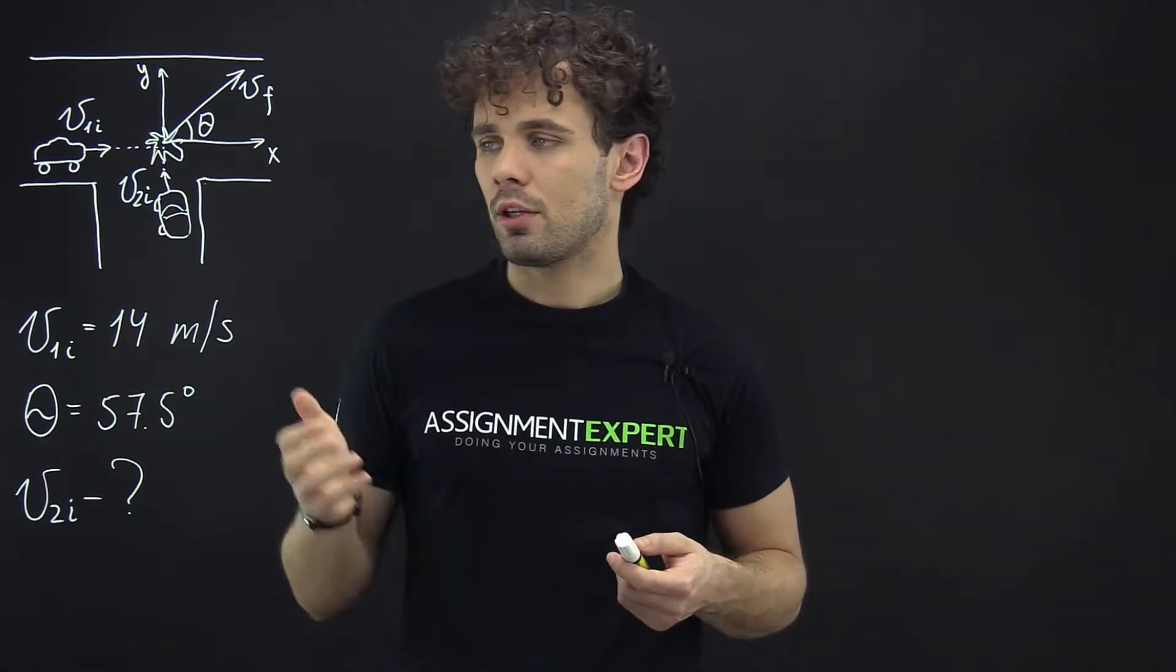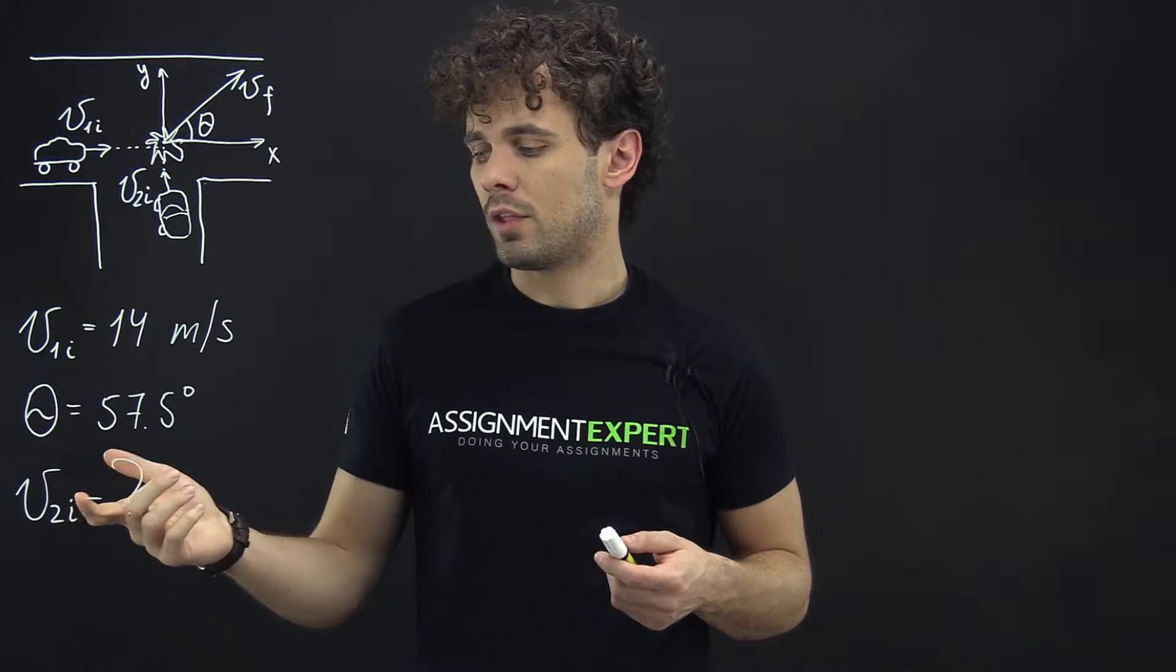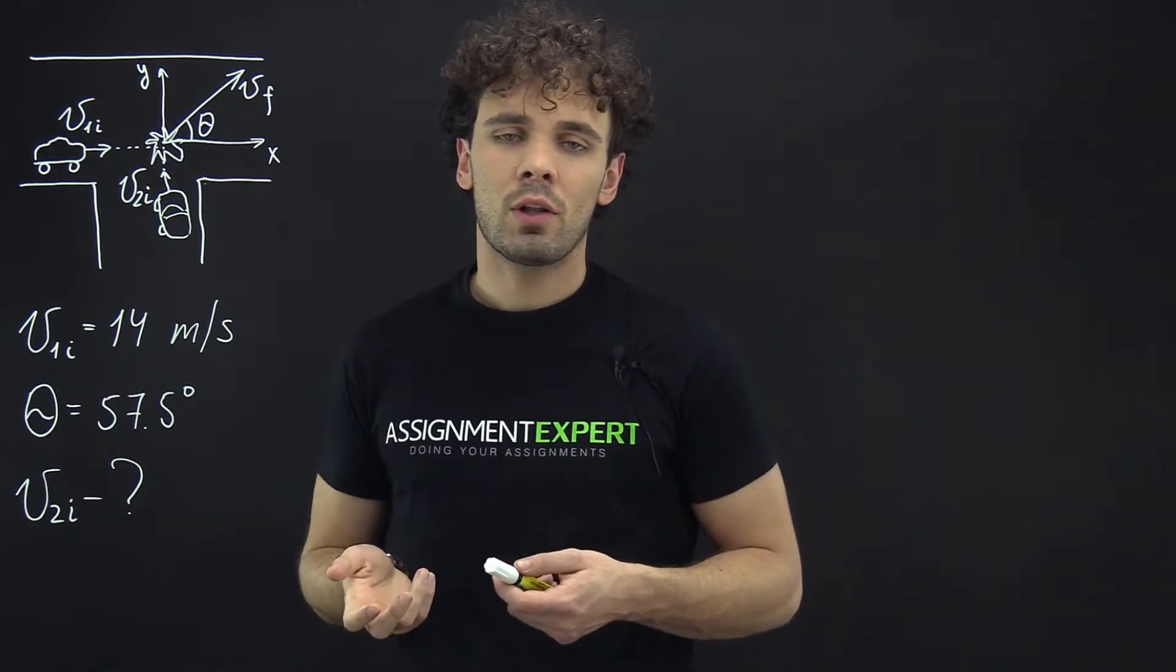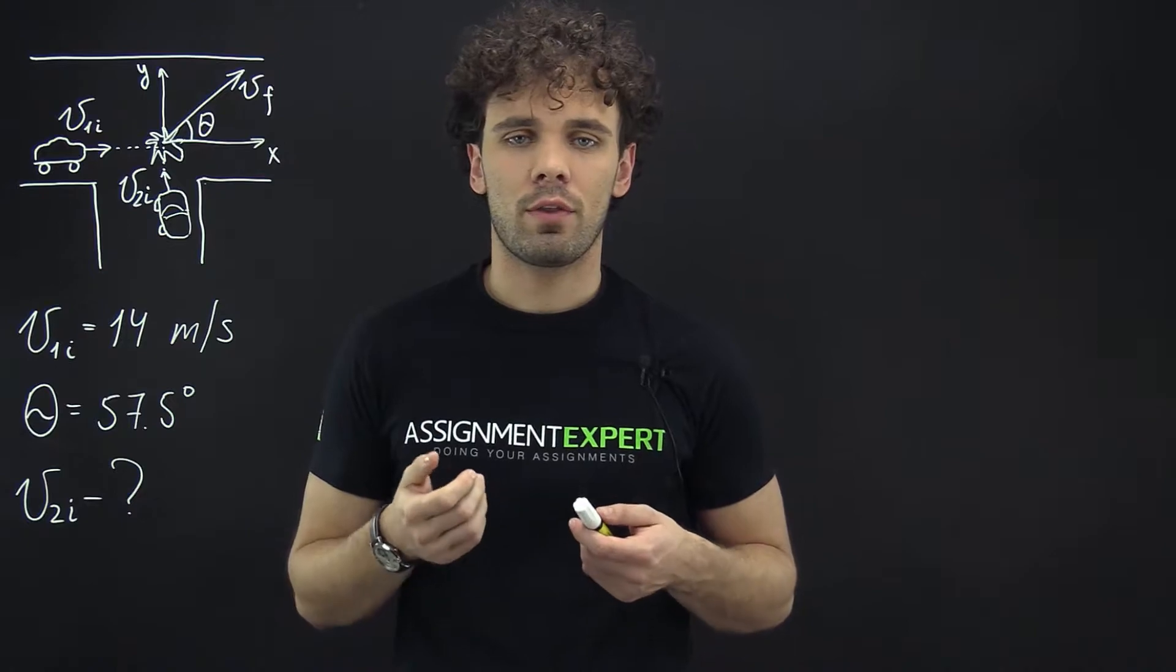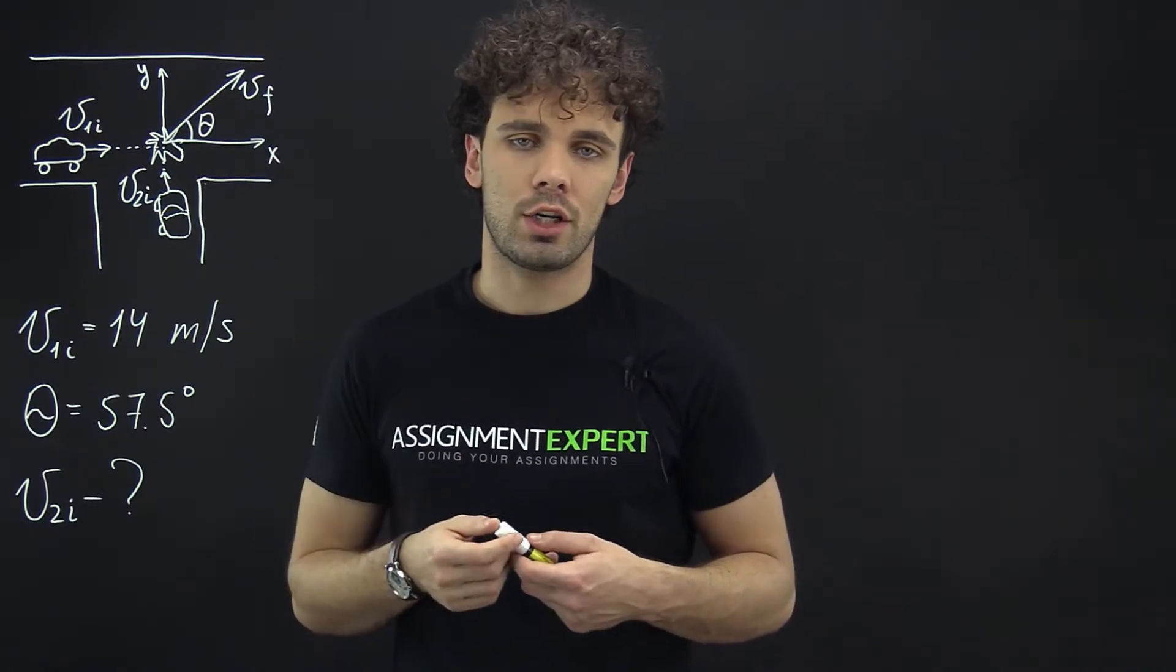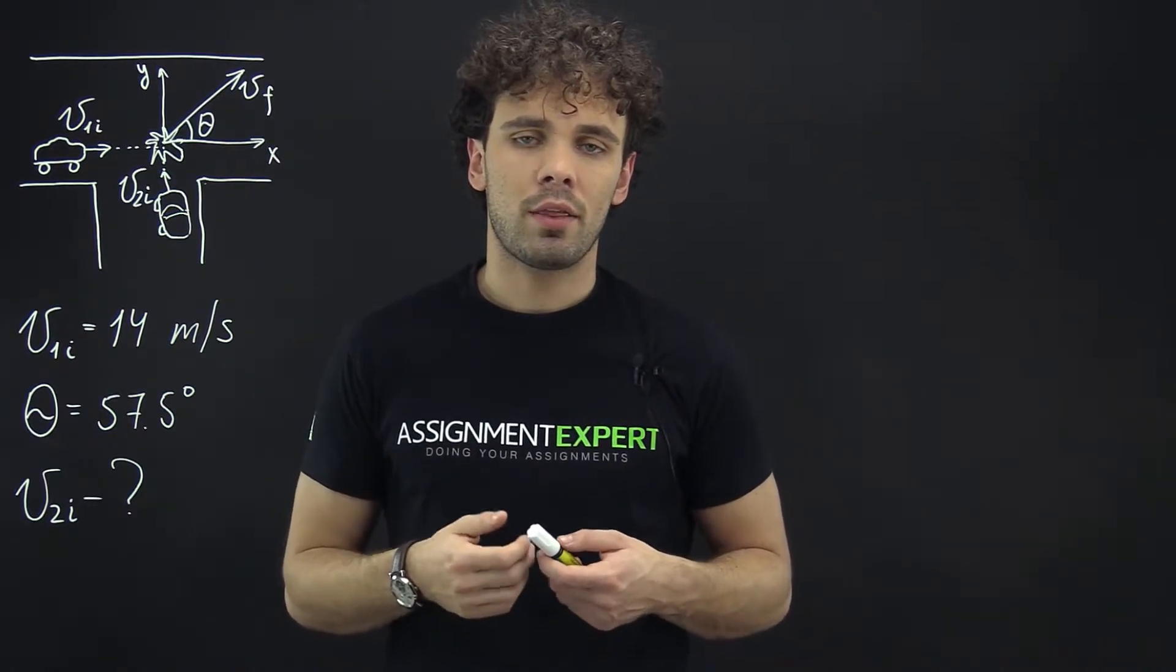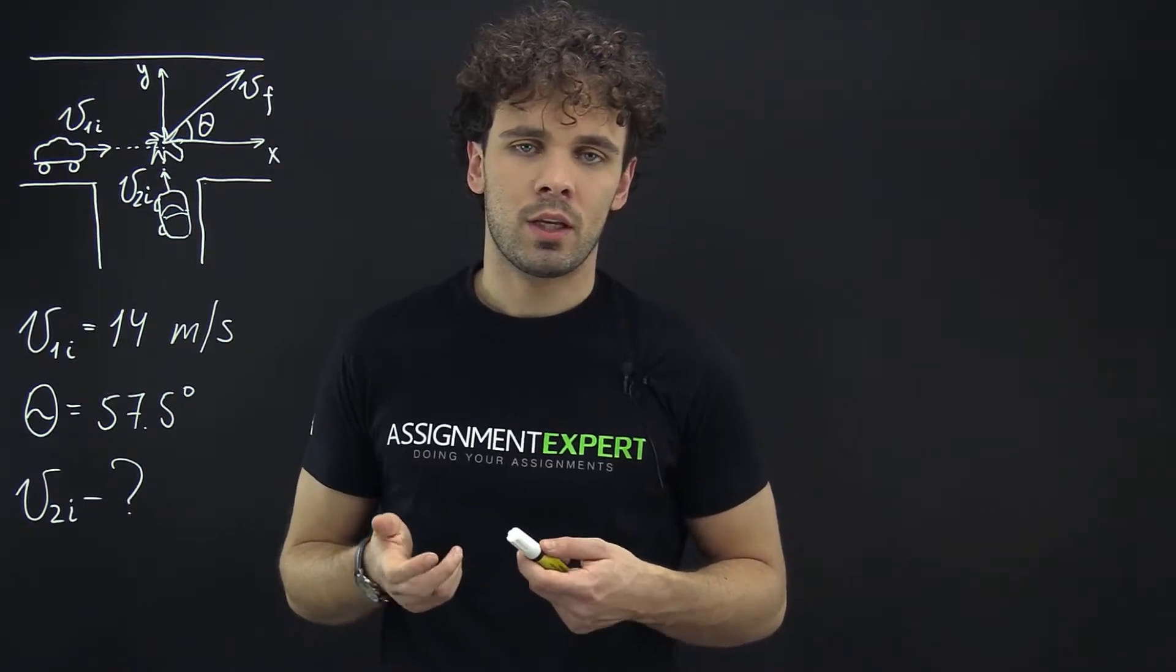Let us find the initial speed of the second car, V2i. So, first of all let's assume that we're searching for the final speed of these two cars. For that we need to apply the law of conservation of momentum.